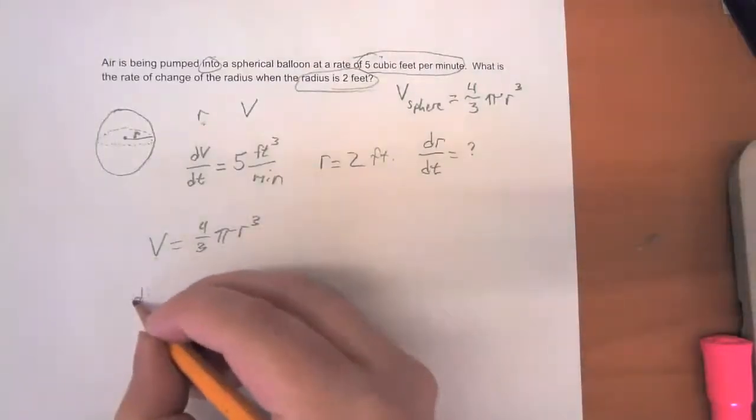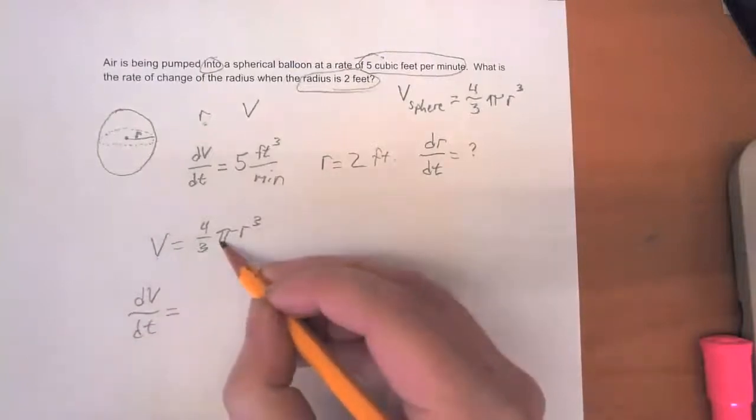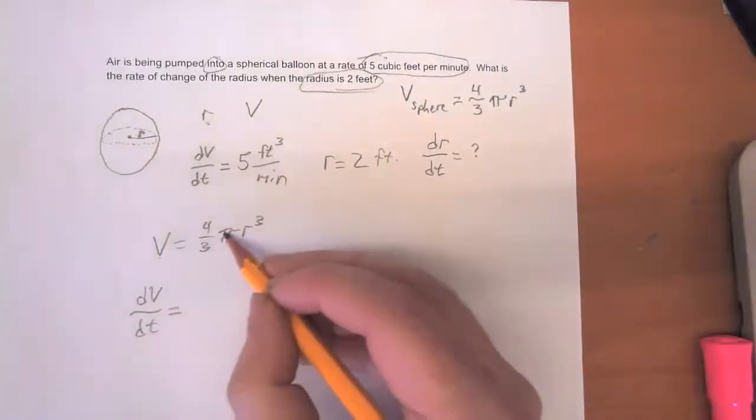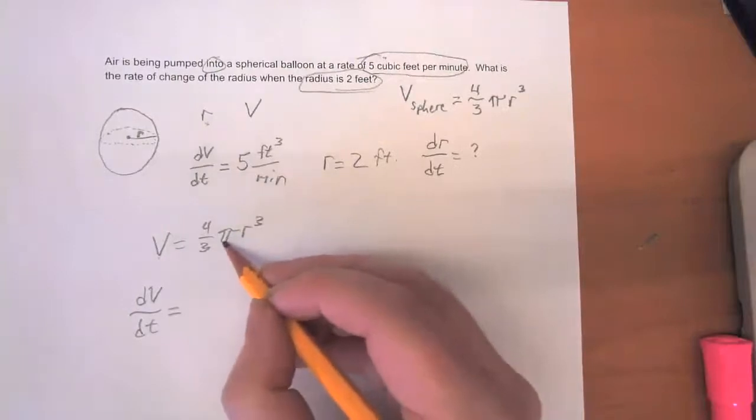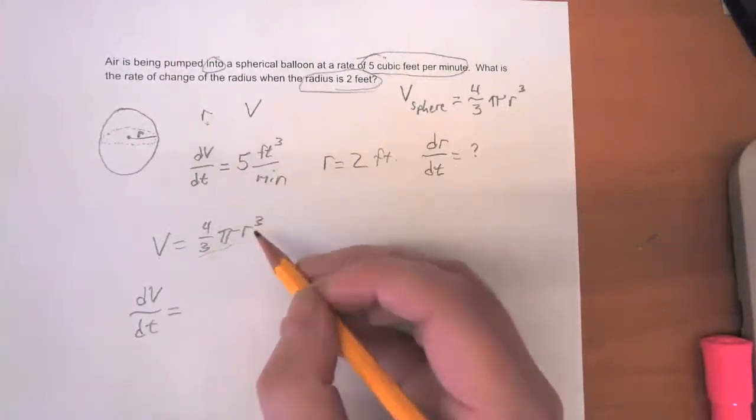The derivative of V with respect to time is dV/dt. Four thirds times pi is just a constant. We're going to treat pi like it's a constant. So this is like the coefficient in front of r cubed. We're going to use the power rule.